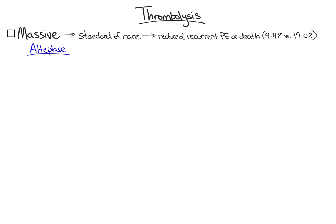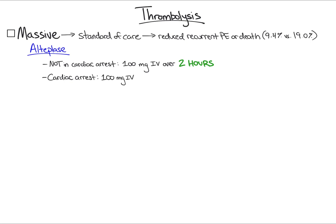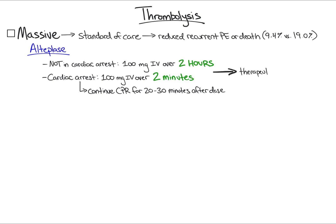Alteplase is administered within our hospital system. For patients with massive PE that are not in cardiac arrest, Alteplase 100 mg IV is administered over two hours. For patients in cardiac arrest, the dose is administered over two minutes during the code. In code situations, CPR must be continued for at least 20-30 minutes following Alteplase administration to allow for circulation of the medication and clot breakdown. Both doses should be followed by therapeutic anticoagulation with unfractionated heparin, if possible.